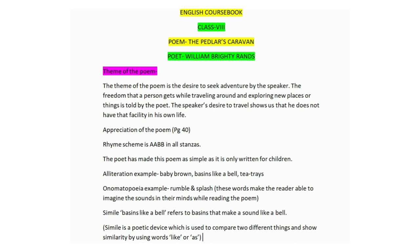Alliteration and onomatopoeia definitions we have discussed in the previous video also. One simile is also there: basins like a bell, which refers to basins that make a sound like a bell. A simile is a poetic device which is used to compare two different things and show similarity by using words like 'like,' 'as,' etc.